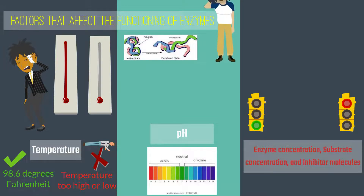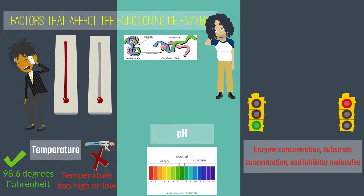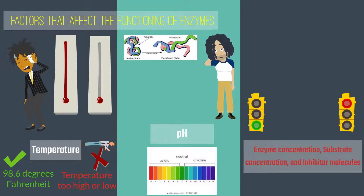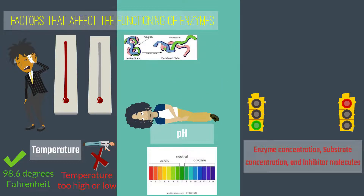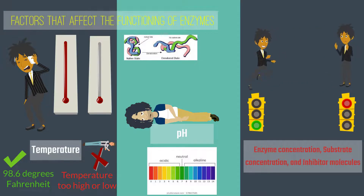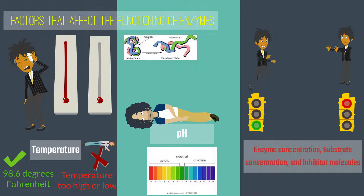Second, changes in pH may not only affect the shape of an enzyme, but may also change properties of the substrate so that either the substrate cannot bind to the active site or it cannot undergo catalysis. In general, enzymes have an optimum pH level; however, the optimum pH is not the same for each enzyme. Third, other factors such as enzyme and substrate concentrations can affect enzymes — there may be too many substrates and not enough enzymes to conduct chemical reactions. The number of inhibitors present also plays an important role, as they act to slow down enzyme productivity.